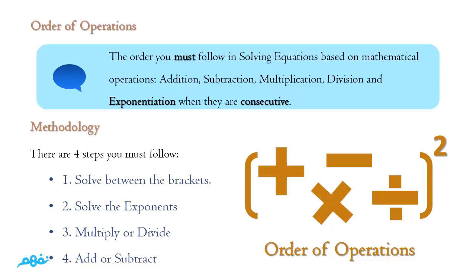When these operations are consecutive — meaning one after another — why must we follow this order? Because any small defect will generate a different value. You must follow this order of operations, whether on a calculator or when doing it on paper, to generate the true and correct value and to avoid misconceptions.